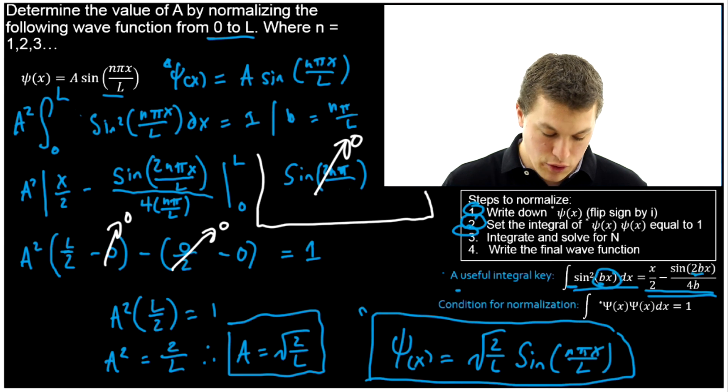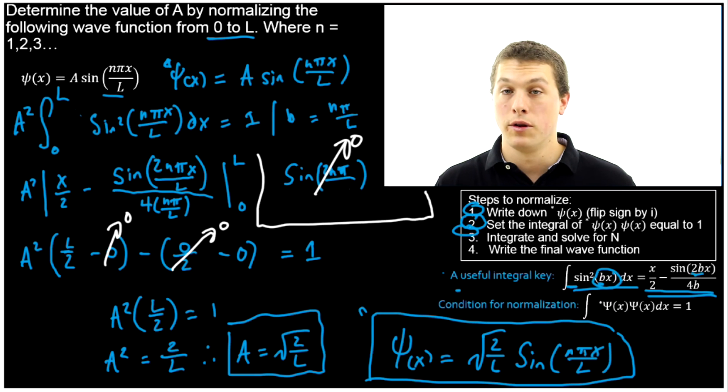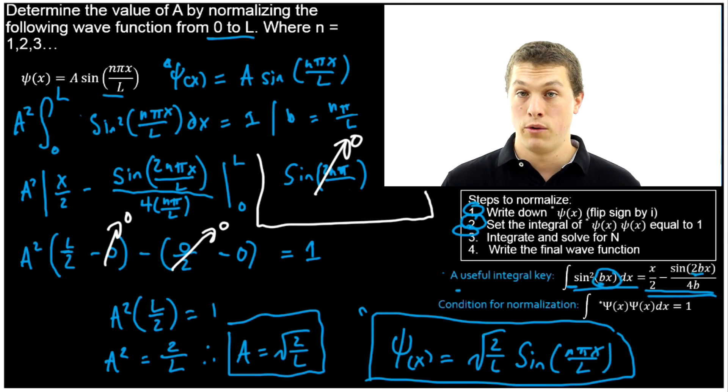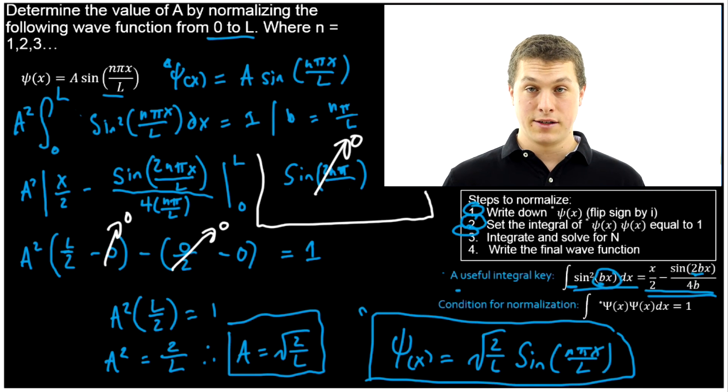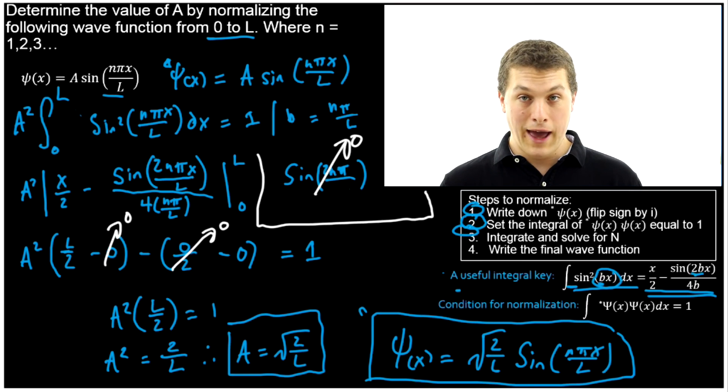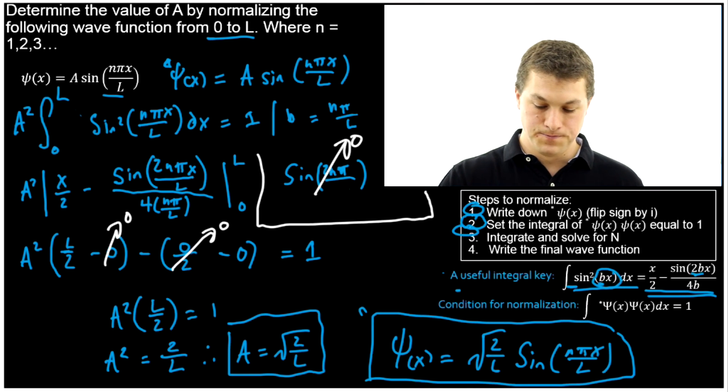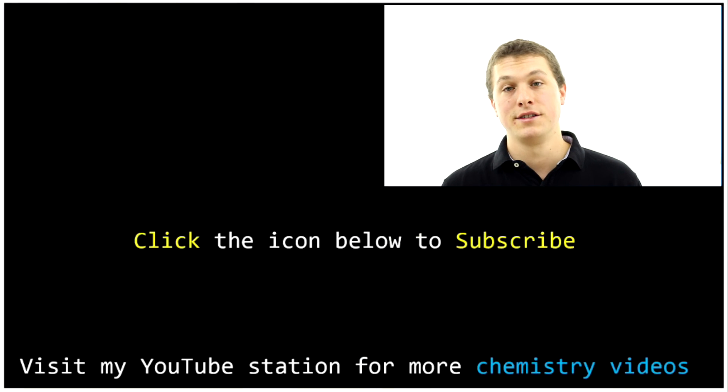So that's how we normalize the particle in the box wave function. We've normalized all of them. Turns out the integration constant, or the normalization constant, is square root of 2/L, where L is the length of your box. Notice sometimes for your box length you'll use the variable a, and then it's just square root of 2/a. Doesn't matter what variable you use for box length. Thanks for watching this episode of Real Chemistry on normalizing the particle in the box. Go ahead and subscribe by clicking the Real Chemistry icon below.